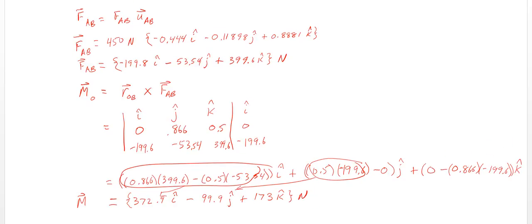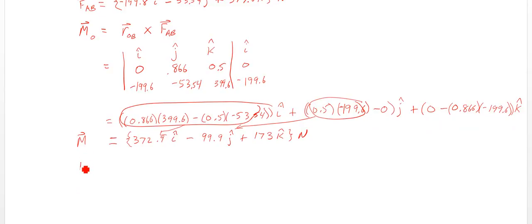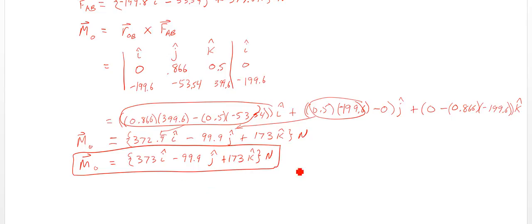So my moment about O, to three significant figures, is going to be 373i minus 99.9J plus 173k. So there you have it. And if we needed to find the magnitude of that, we could square all of these and take the square root, and that would give us the magnitude of that moment. Oh, excuse me. This should be Newton meters. We crossed a position vector with a force vector, so we have the units of our scalar are Newton meters.